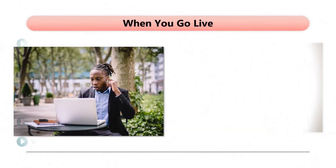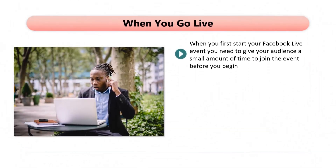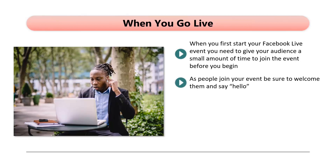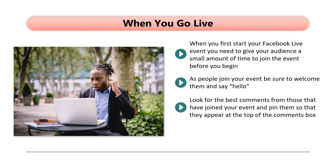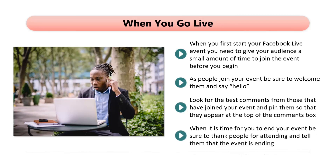When you go live, give your audience a small amount of time to join before you begin — don't make this too long or those already joined will become agitated. Welcome people as they join and say hello. Start interaction by asking people for their locations or what they want to achieve by attending. Pin the best comments so they appear at the top of the comments box. Tell your audience whether you will take and answer questions as you go or have a specific Q&A session at the end. When it is time to end, thank people for attending, tell them the event is ending, and hit the Finish button.